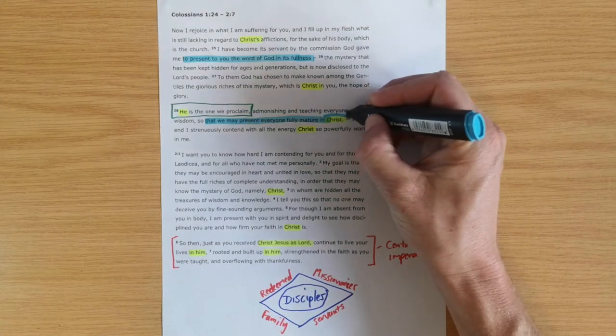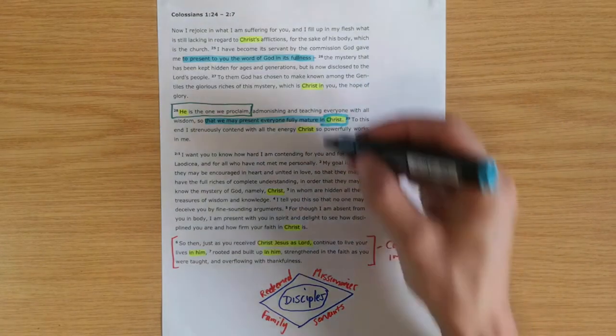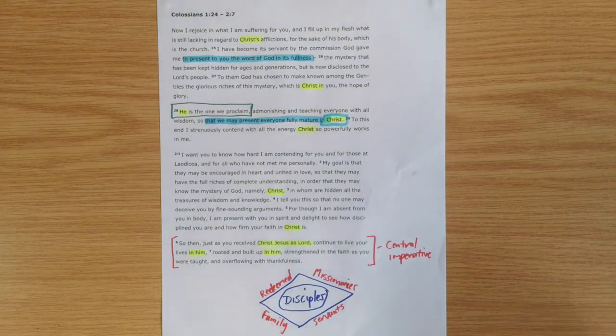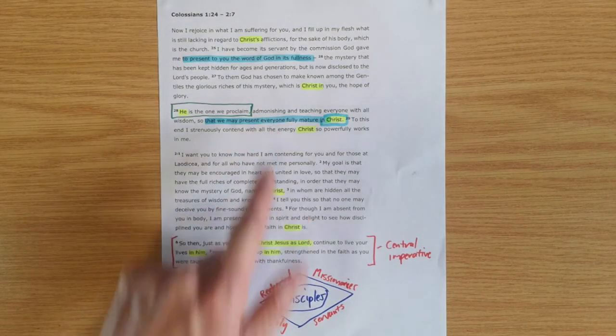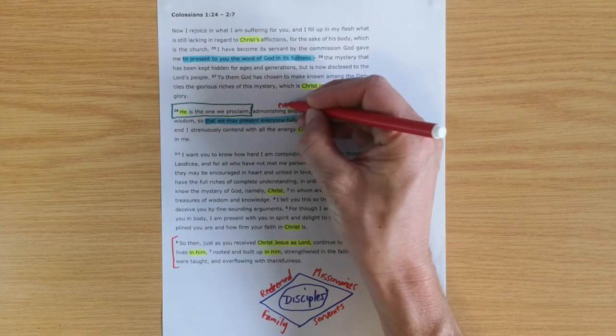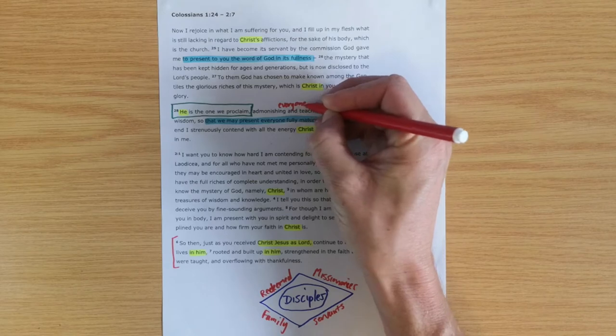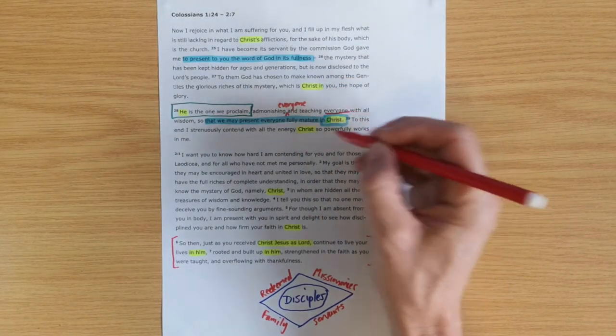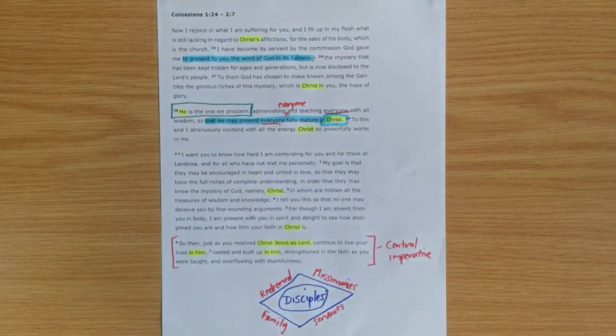He says, 'So that we may present everyone fully mature in Christ.' Presenting this word of truth in its fullness has the end goal of making us mature in Christ. There is admonishing—there should be the word 'everyone' in here.